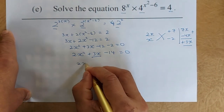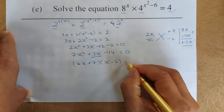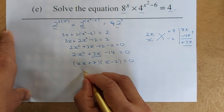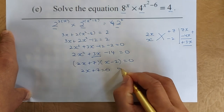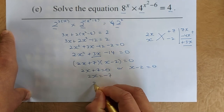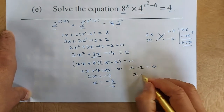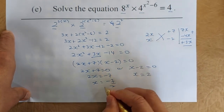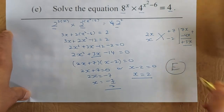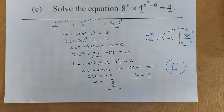So the answer is (2x plus 7)(x minus 2) equals 0. Solving: 2x plus 7 equals 0 gives x equals minus 7 over 2, or x minus 2 equals 0 gives x equals 2. Those are the two answers, and that is an excellence. Hopefully you can go through question 1 again, and we'll go to question 2 in the future. Have a good day and enjoy yourself.